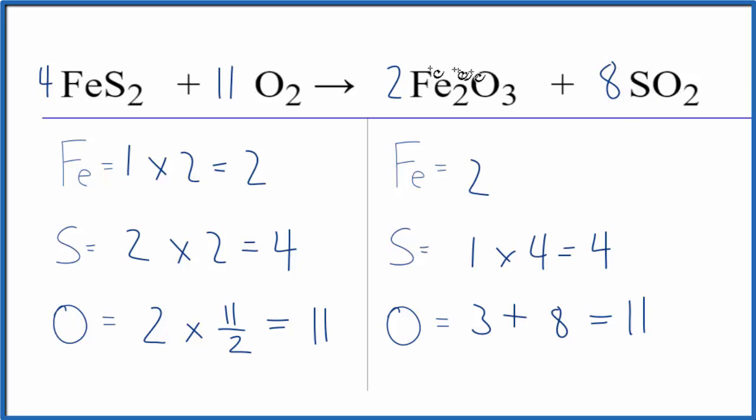And these would be the coefficients for the equation FeS2 plus O2 gives us Fe2O3 plus SO2. So either way, leave the O2 for last when you're balancing equations. You want to try to get it to an even number, or you can use this method where you multiply it by a fraction.